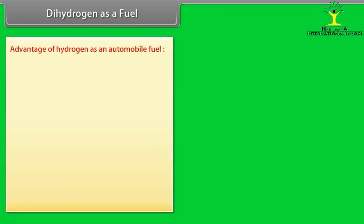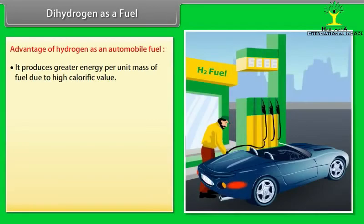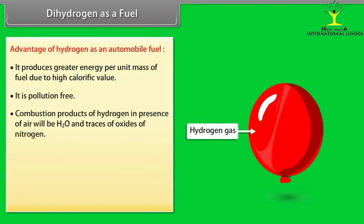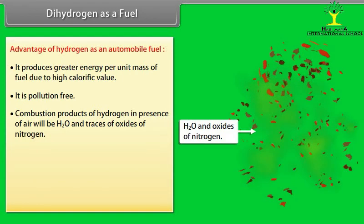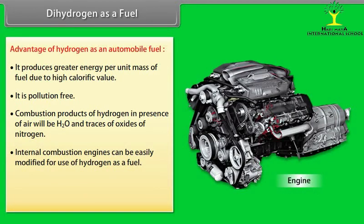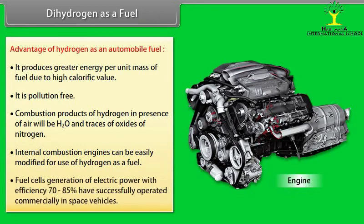Advantages of hydrogen as an automobile fuel: It produces greater energy per unit mass of fuel due to high calorific value. It is pollution free. Combustion products of hydrogen in presence of air will be H2O and traces of oxides of nitrogen. Internal combustion engines can be easily modified for use of hydrogen as a fuel. Fuel cells generating electric power with efficiency 70-85% have successfully operated commercially in space vehicles.